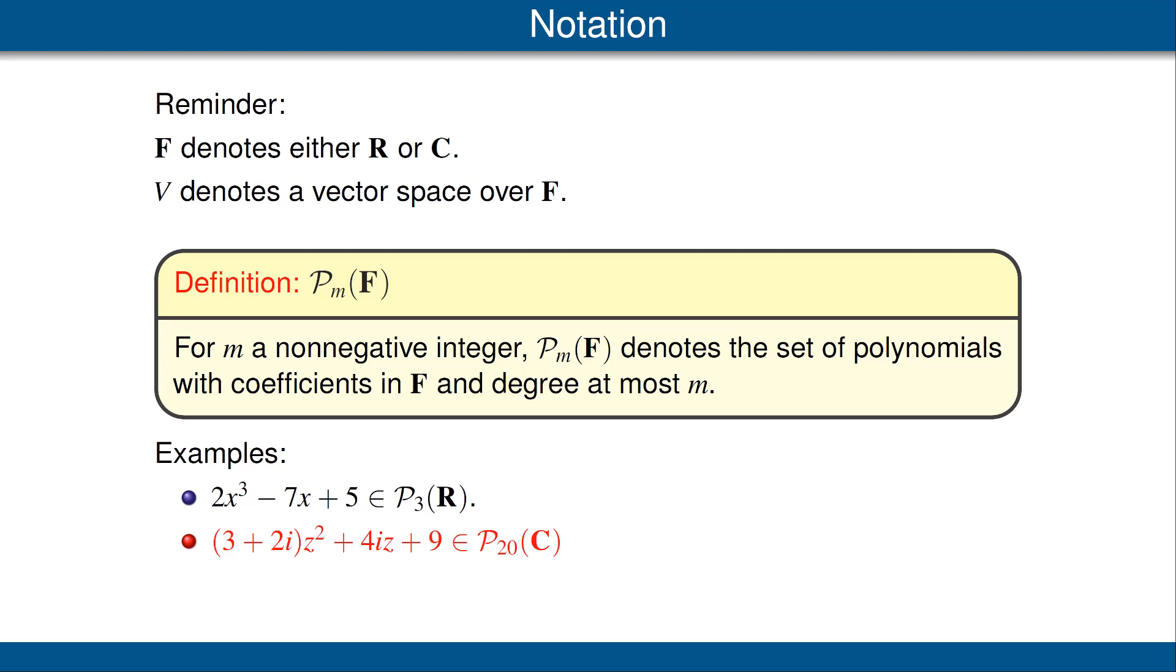As another example, let's look at this polynomial: (3+2i)z² + 4iz + 9. This is a polynomial with complex coefficients. It has degree 2, thus it is in P₂₀(C) because it has degree less than or equal to 20. Often for the variable we use x when dealing with real numbers and z when dealing with complex numbers, but this is not a hard and fast rule. Any variable can be used, including z for real numbers and x for complex numbers.